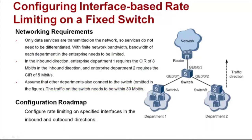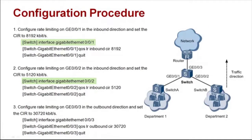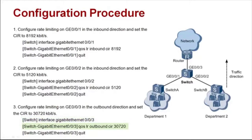To meet the requirements, configure rate limiting on specified interfaces in the inbound and outbound directions. On GE0/0/1 and GE0/0/2 connected to two departments, configure inbound interface-based rate limiting, setting the CIR values to 8192 kbps and 5120 kbps respectively. On GE0/0/3 of the switch connected to the router, configure outbound interface-based rate limiting to limit the rate within 30720 kbps.